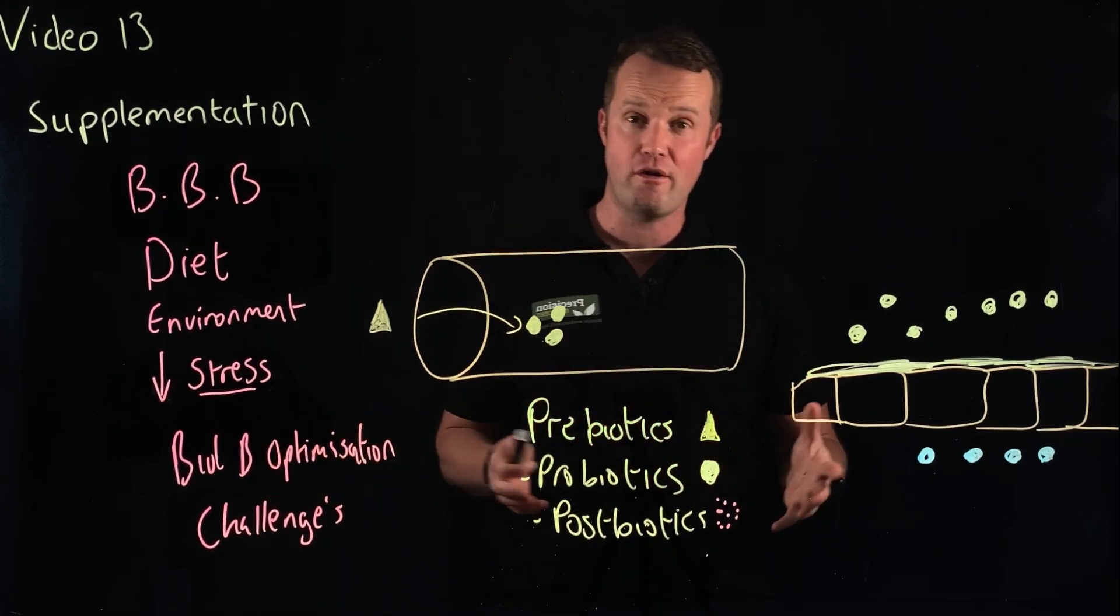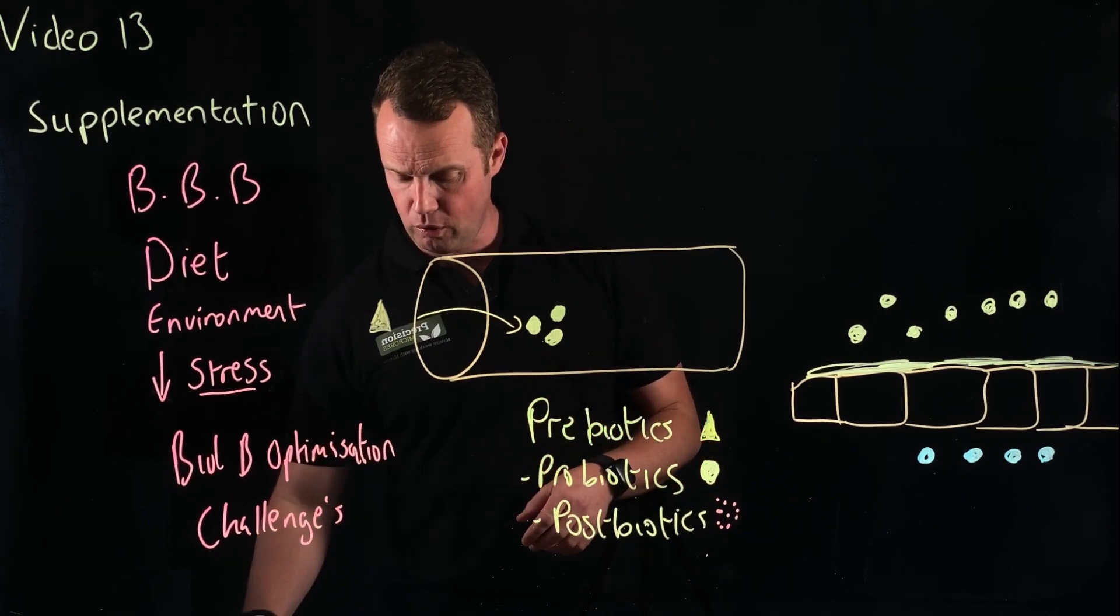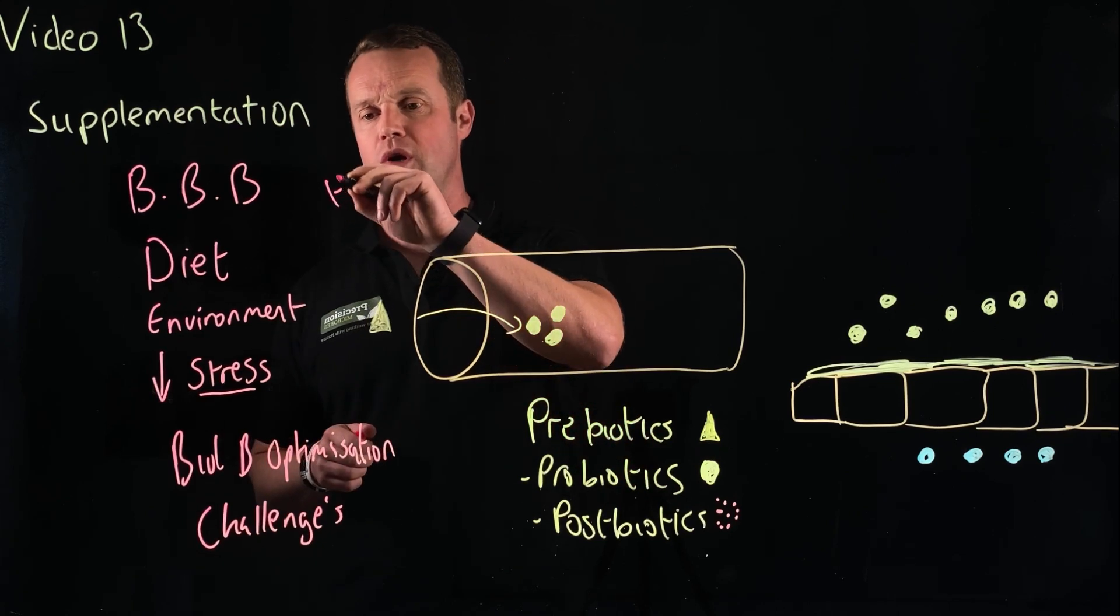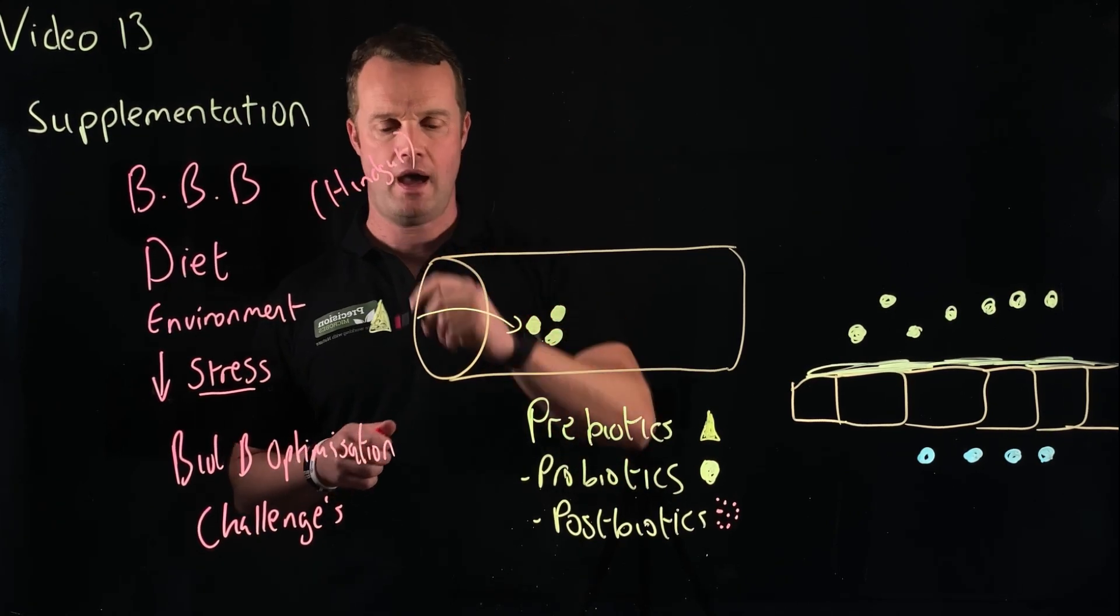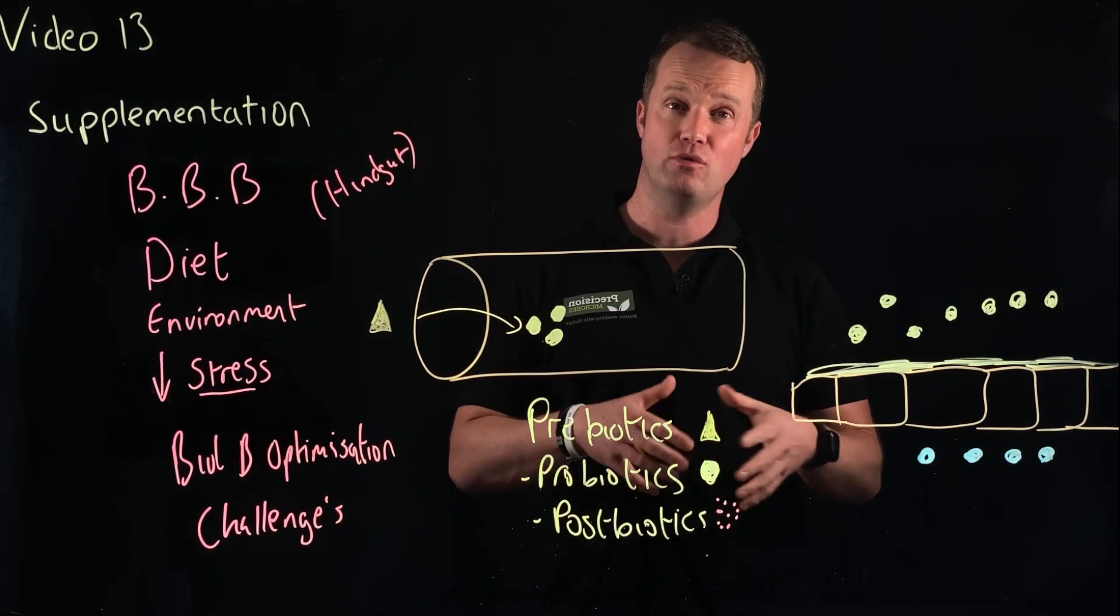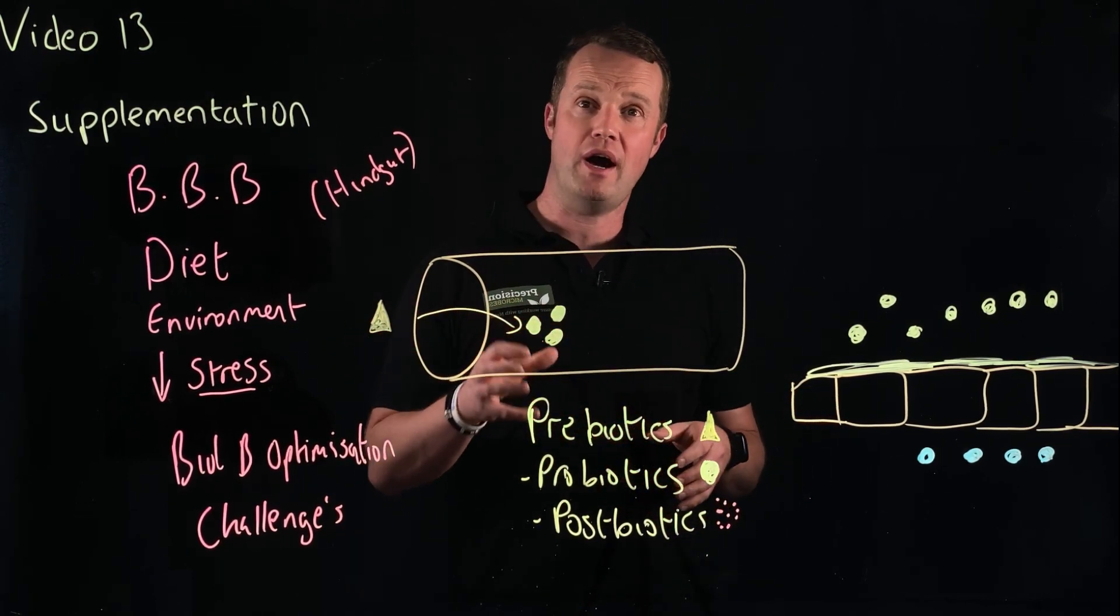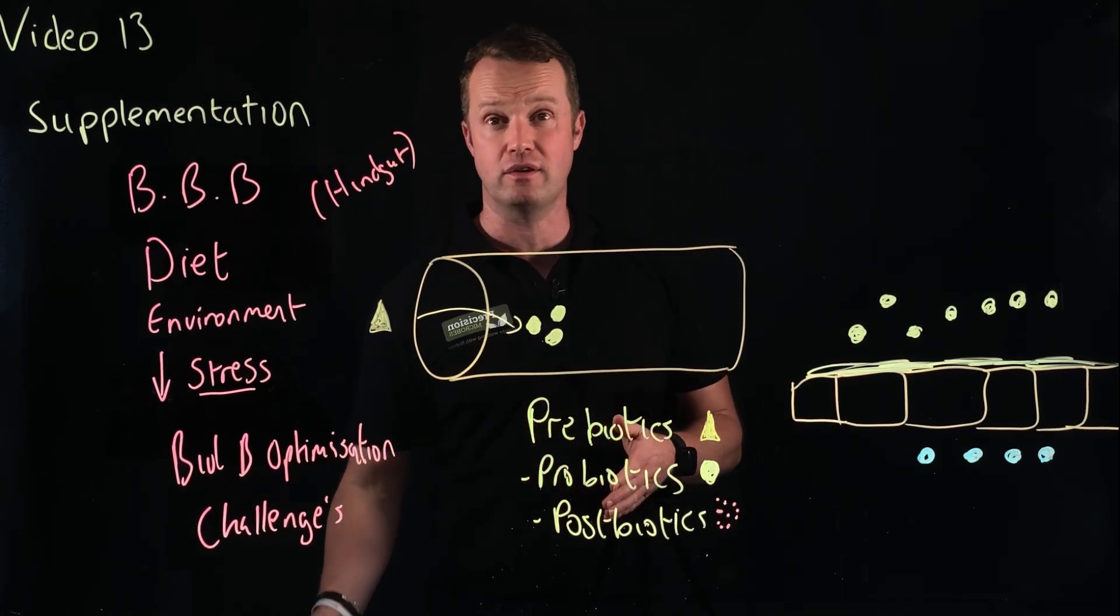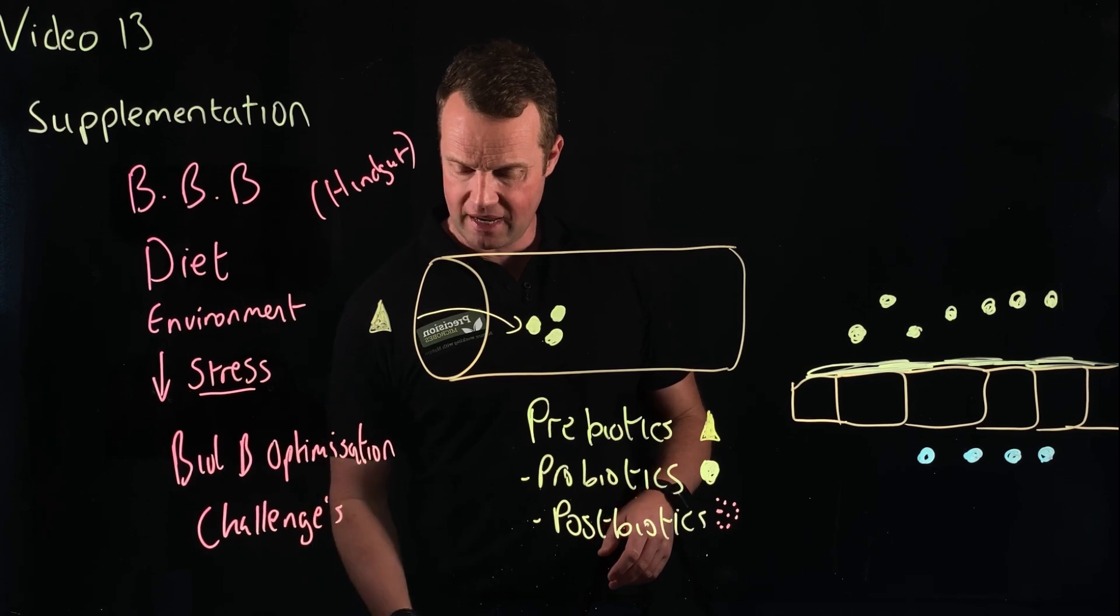When prebiotics go into the gut, what they're doing is they're a feed source for the bacteria to ferment and live off. So prebiotics are essential. That's why forage is a really important component, because a good forage diet will feed the microbes, particularly in the hindgut. I'm not talking about gastric ulcer syndrome; we're looking at hindgut supplementation. Prebiotics are the feed for good bacteria. We're trying to support beneficial bacteria.